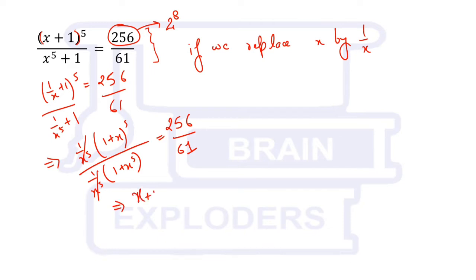You can write (x + 1)^5 / (x^5 + 1) = 256/61, means the same equation is obtained. So it means if a is a root, then 1/a is also a root. And this result can help us.